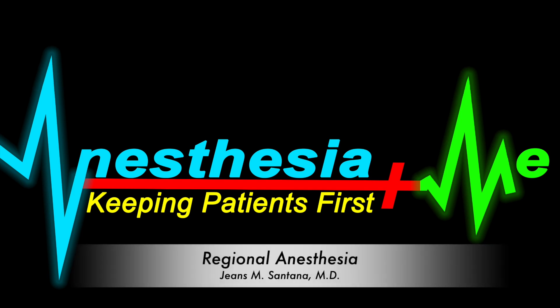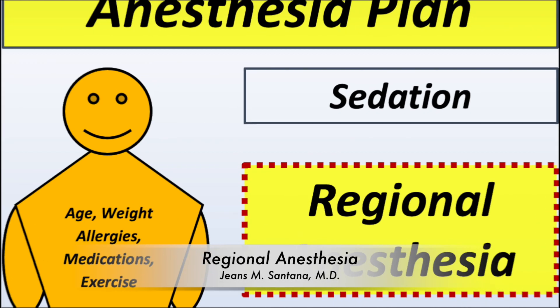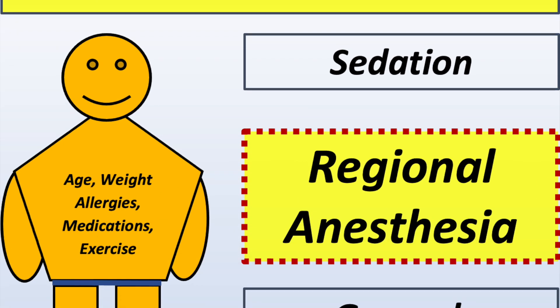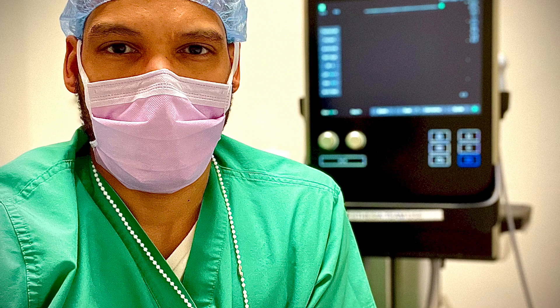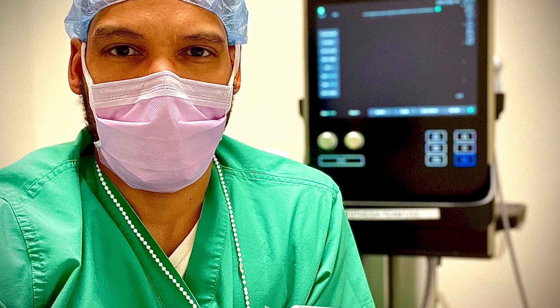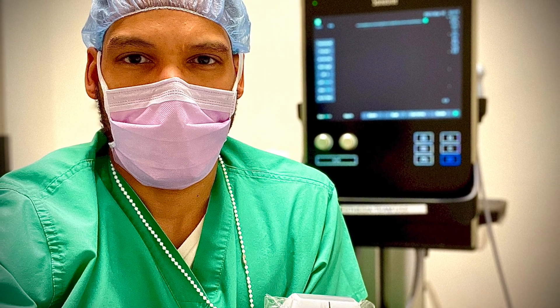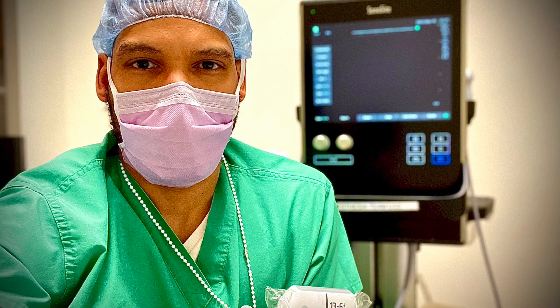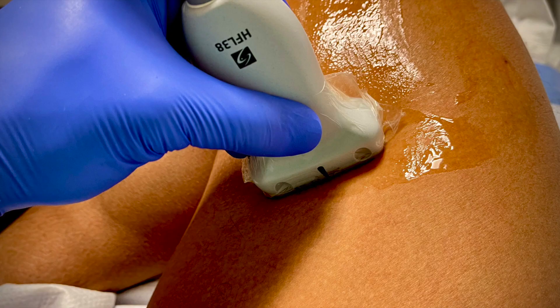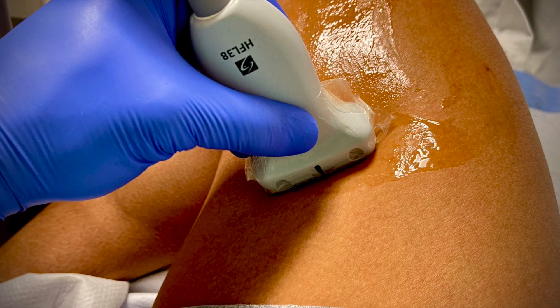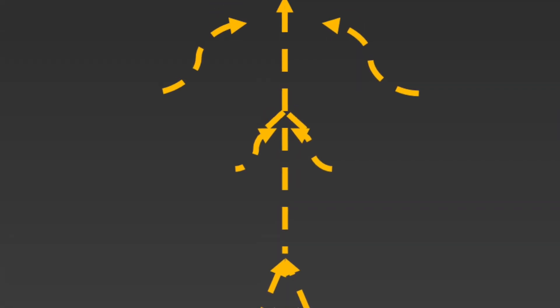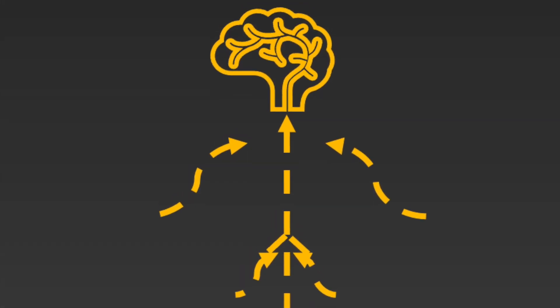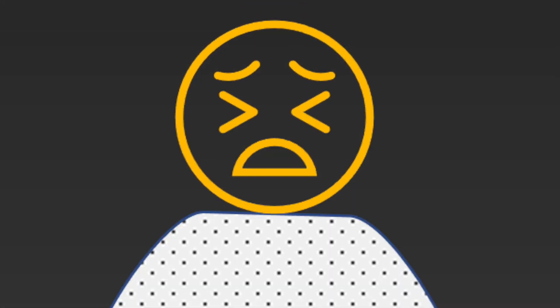The anesthesia plan for your surgery may involve a regional technique or nerve block. In this video, I am going to talk about why they are an excellent and popular option to manage pain caused by surgeries of the arms, abdomen, and legs. You probably know that there are many nerves all throughout your body that sense and tell your brain that you are experiencing pain.